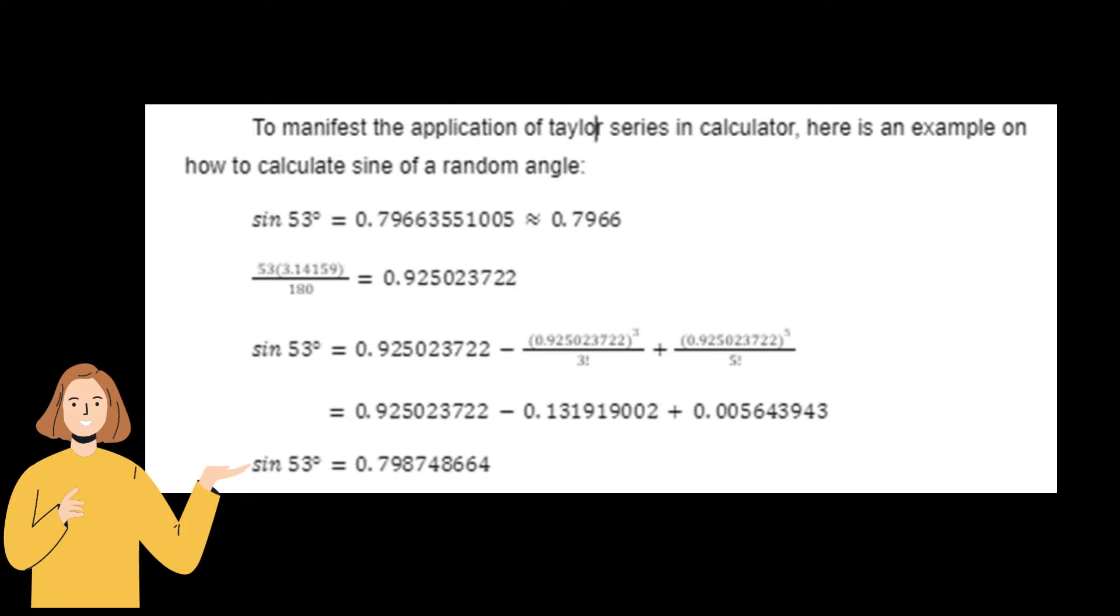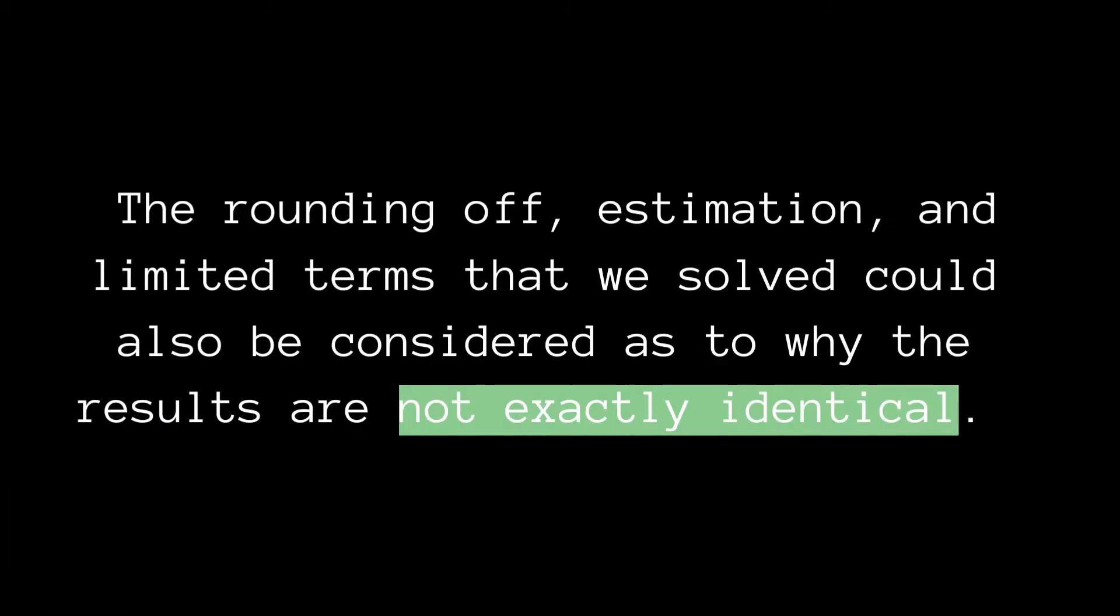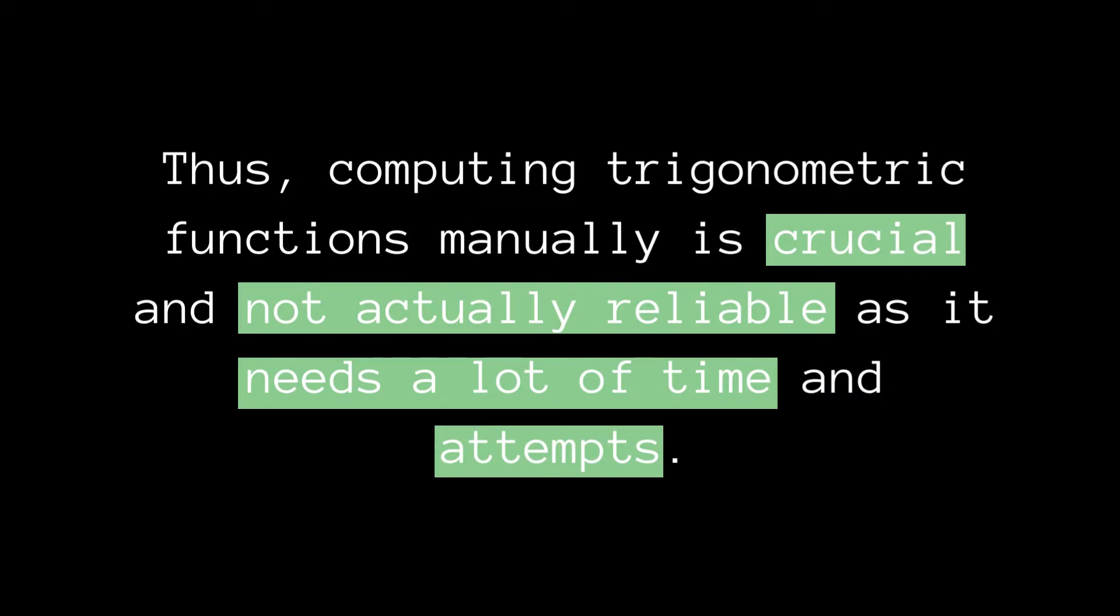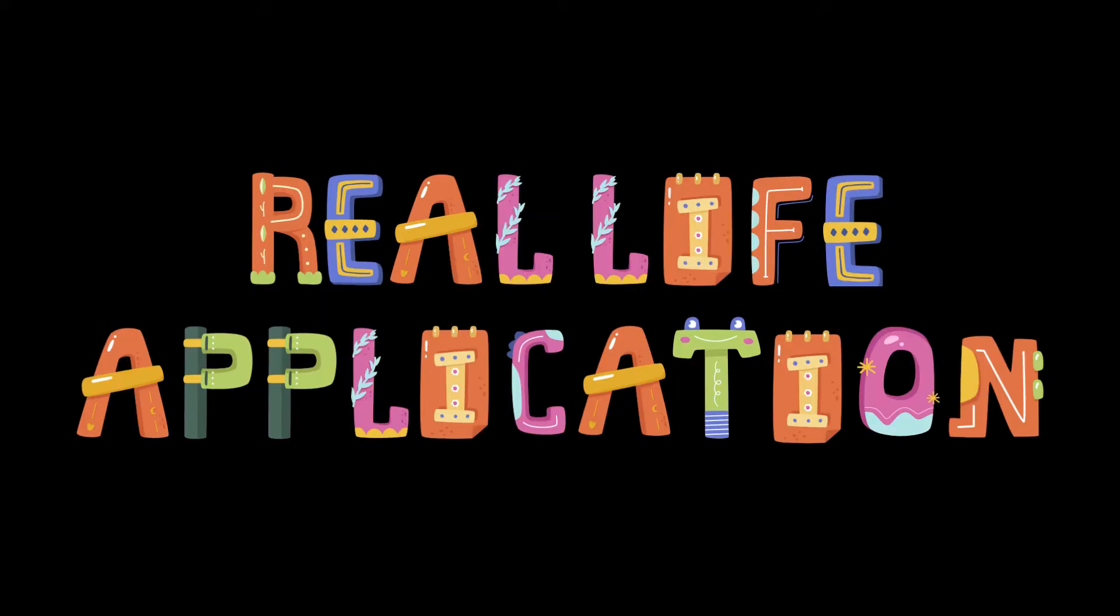Compared to the rounded estimated value of 0.7966, we can see that the result would likely be considered incorrect. The rounding off, estimation, and limited terms that we solved could be considered as reasons why the results are not exactly identical. Thus, computing trigonometric functions manually is not actually reliable as it needs a lot of time and attempts.